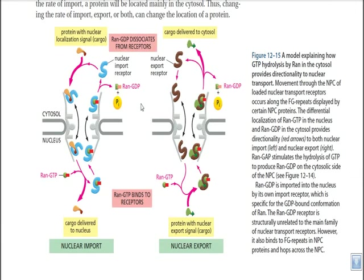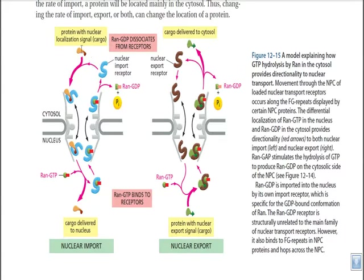Now let us discuss the actual protein trafficking system from cytosol inside the nucleus and from nucleus outside to the cytosol. In this first picture, we are talking about the nuclear transport of a particular protein. In this whole procedure, we have to have particular types of proteins which are actually facilitating this process.